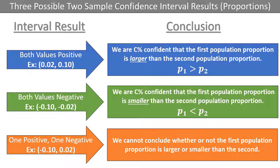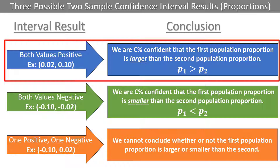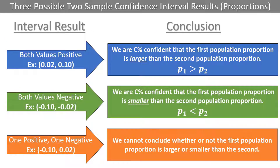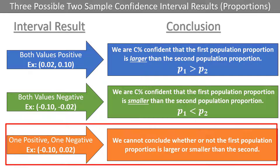These rules should make logical sense. If the difference in sample proportions produces a confidence interval with two positive numbers, such as between 0.02 and 0.1, every single value in that interval is positive, suggesting p1 minus p2 is greater than 0 in all cases. The only way for p1 minus p2 to be positive is if p1 is greater than p2. The same logic applies to the other two rules. Only when 0 is contained inside the interval, as in case 3, can we not conclude whether the first proportion is greater or less than the second.